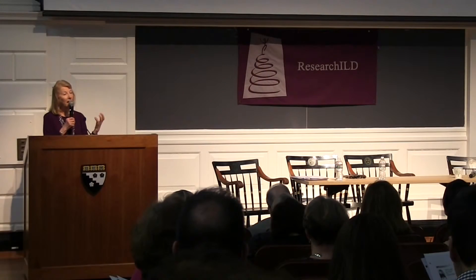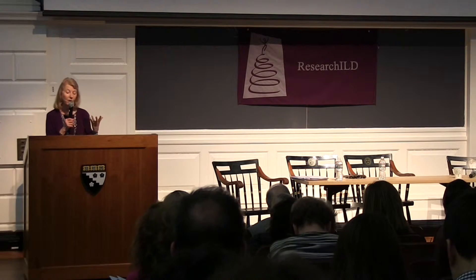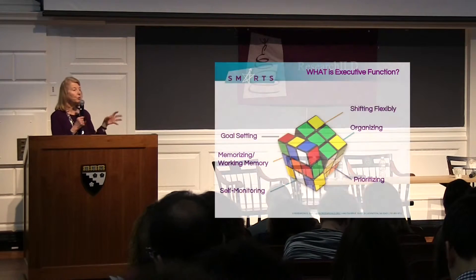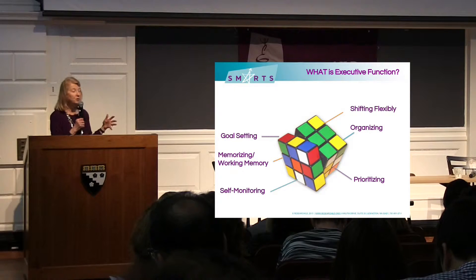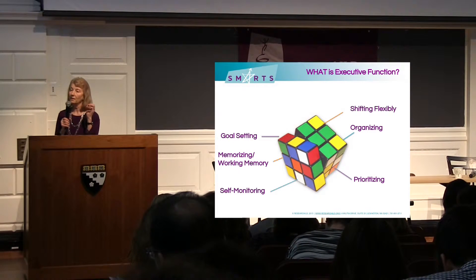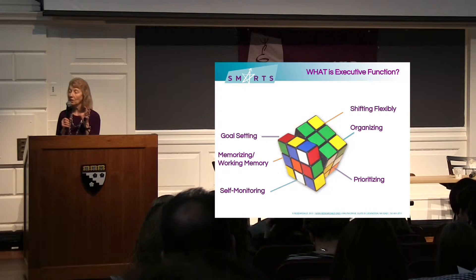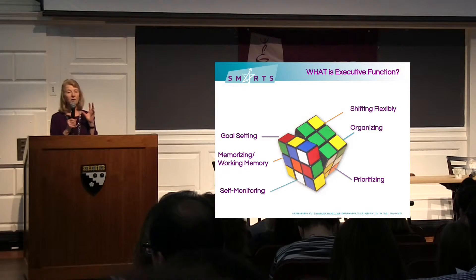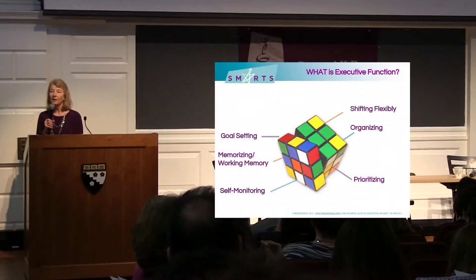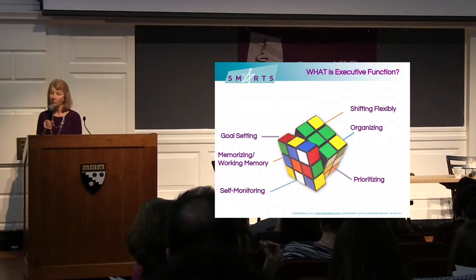The analogy I use in talking about executive function is that of a Rubik's cube. I use this to point out that the processes interconnect so closely that we cannot see them as separate. People often want to see these as separate processes, whereas in fact, if you impact one, if you affect one, if you're teaching to one, you're actually often affecting and teaching to all of these processes.